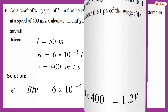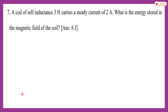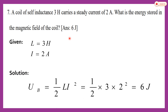The last problem: a coil of self-inductance 3 henry carries a steady current of 2 ampere. What is the energy stored in the magnetic field of the coil? Using U = ½LI², with L = 3 henry and I = 2 ampere, the energy stored is ½ × 3 × 4 = 6 joule.